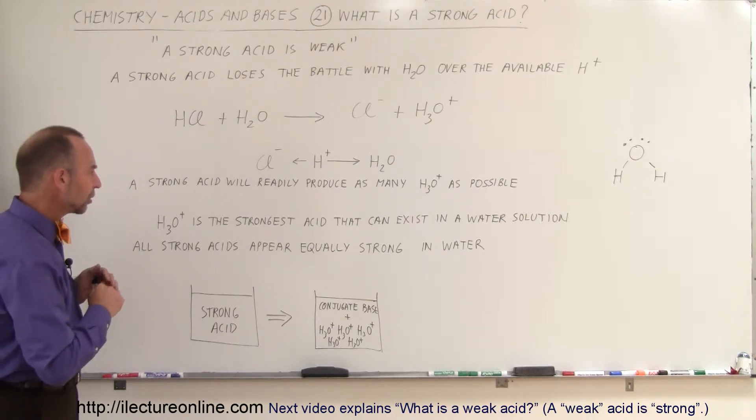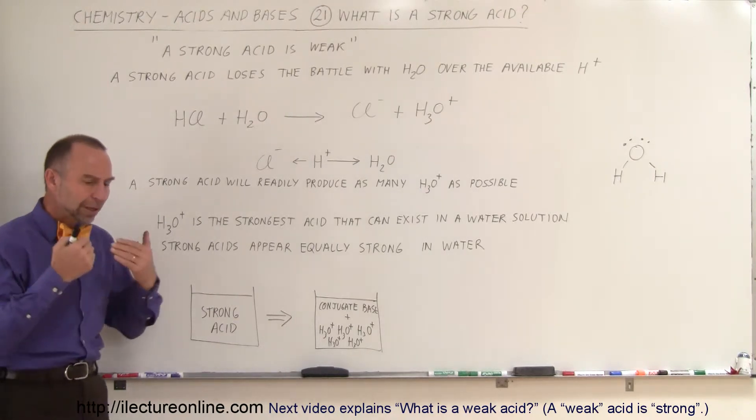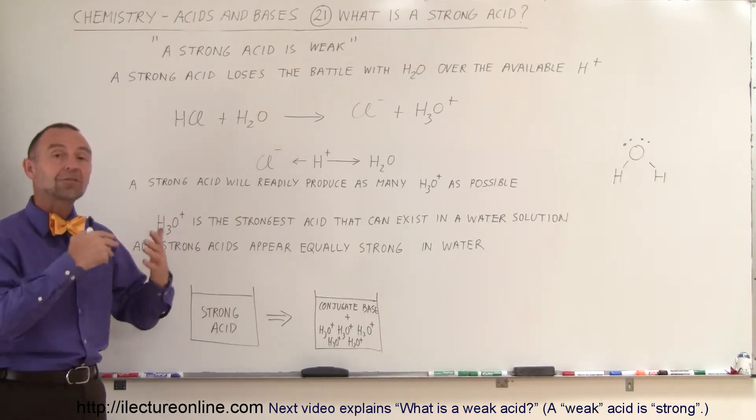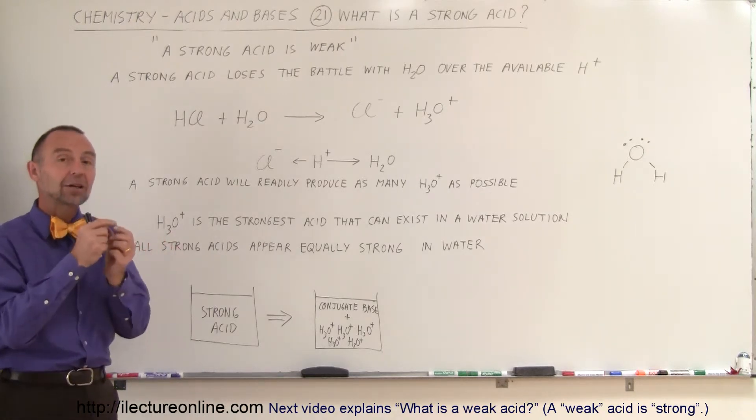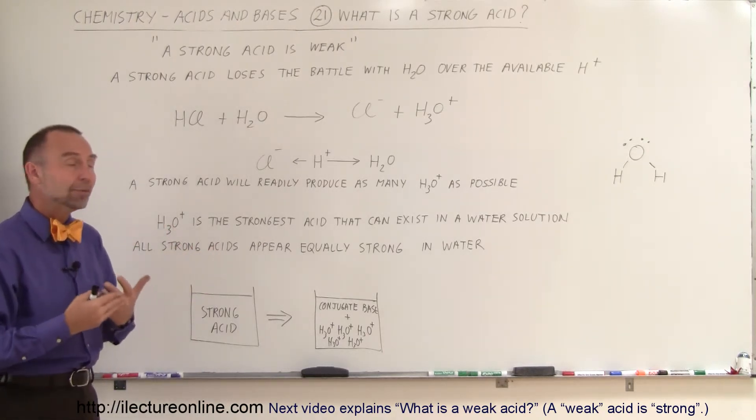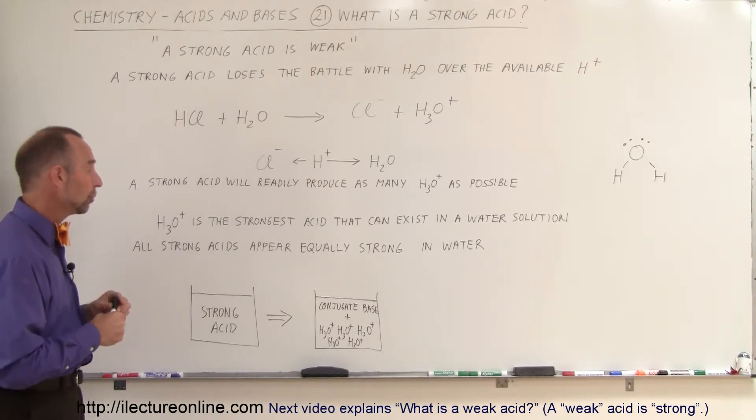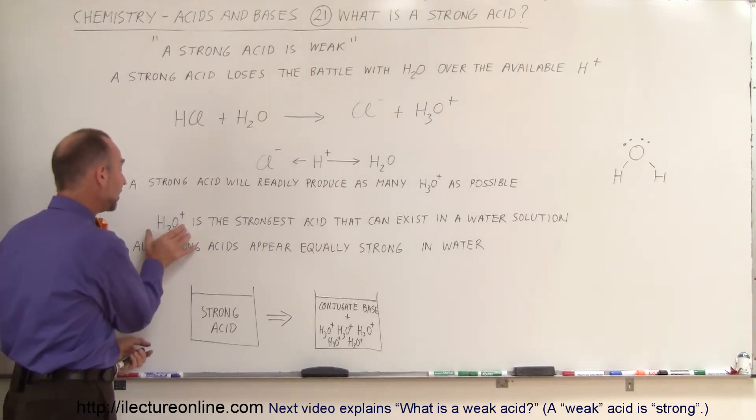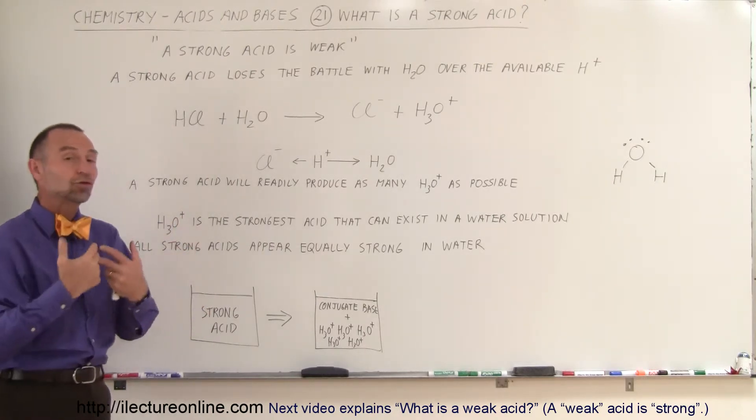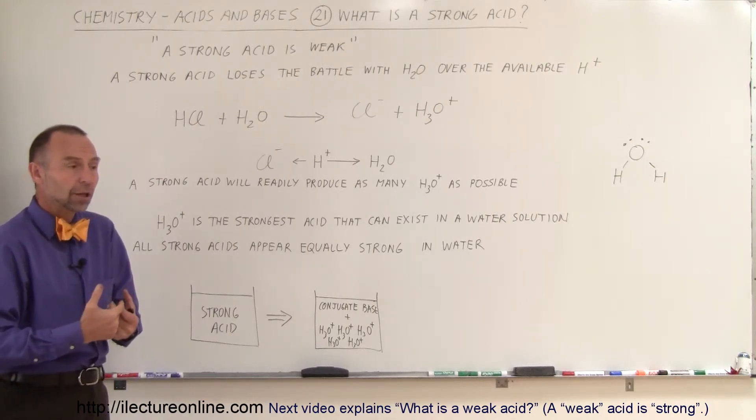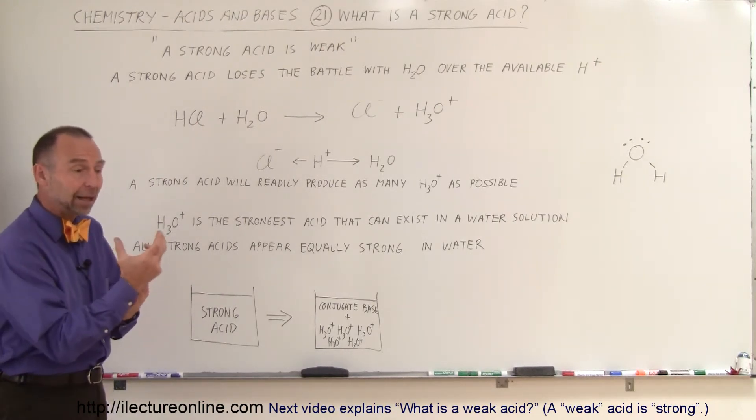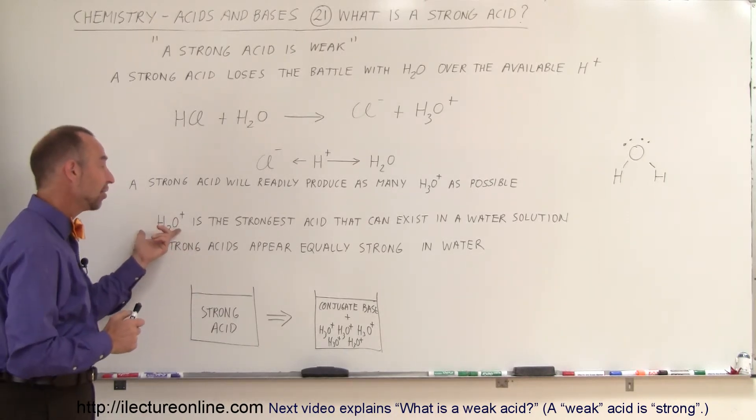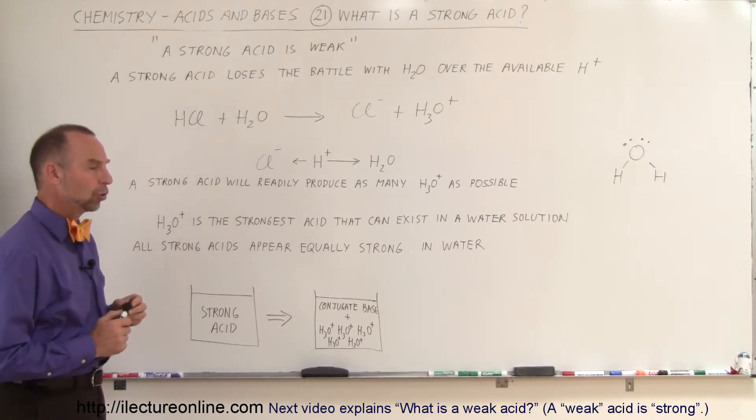Now let's take a look at a few other concepts here. It turns out that whenever you put a strong acid in an aqueous solution with water, you end up with lots of hydronium ions. However many hydrogen ions the acid can donate, it results in one more hydronium ion in the solution. So it turns out that in the end, you end up with lots of hydronium ions, and that in itself means that the hydronium ion is the strongest acid that can exist in a water solution, because it will not relinquish that hydrogen ion and will stay in solution as the hydronium ion. That makes this the strongest acid that can exist in a water solution.